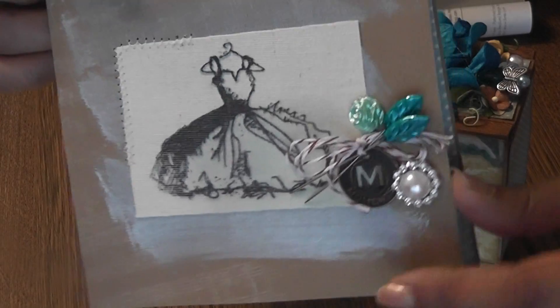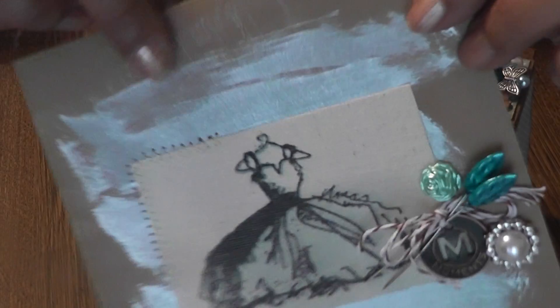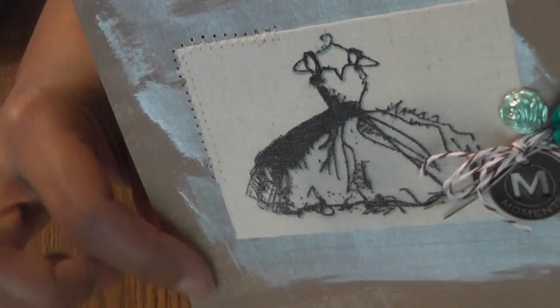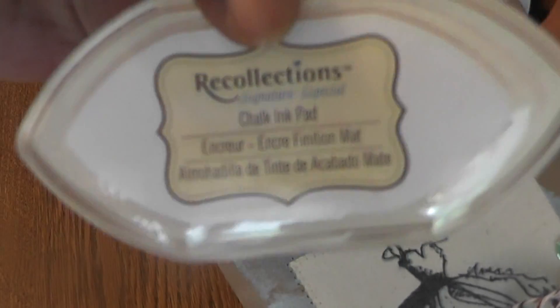And then for the card, I used some Recollections craft paper. I had fun painting. Well, first I stamped it in white with my Kaiser Craft Music Note stamp. You can see it in the background there. And I used some chalk ink. This one by Recollections.